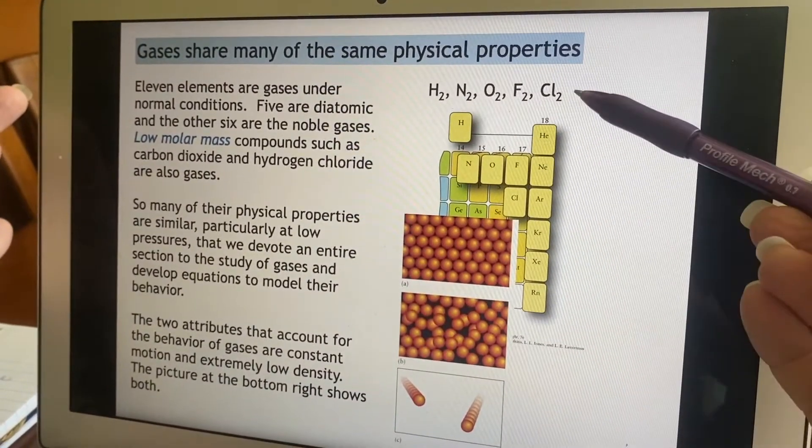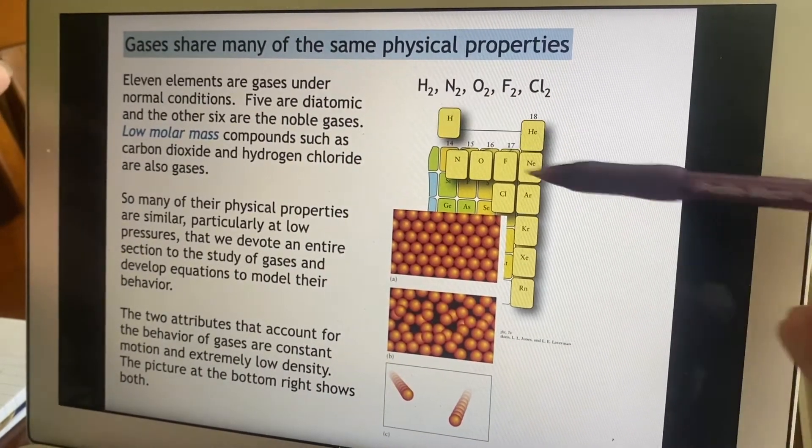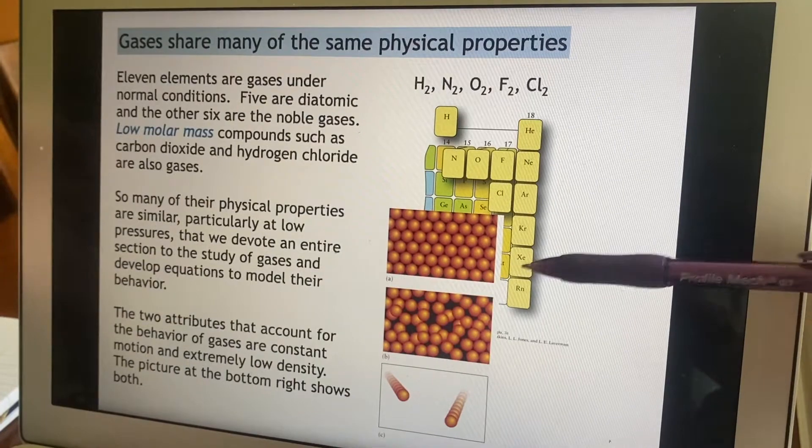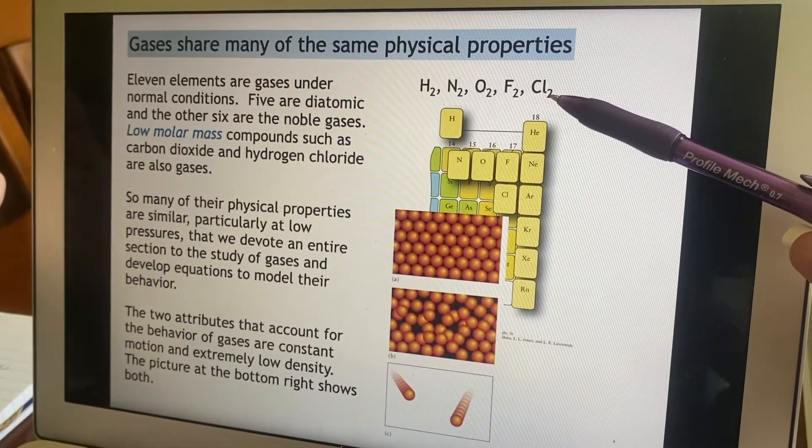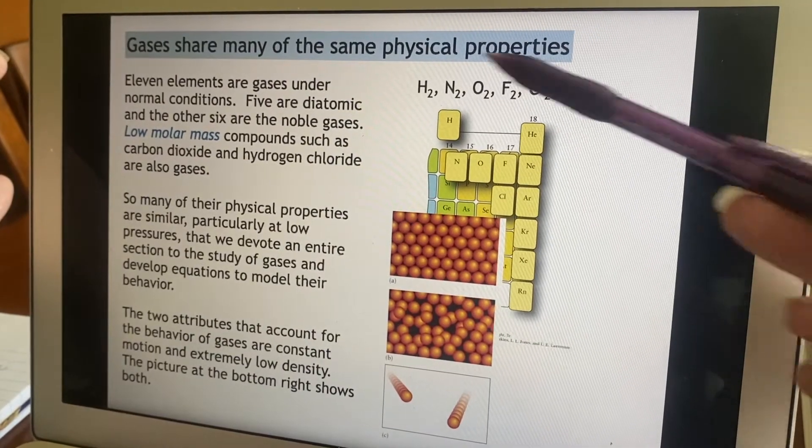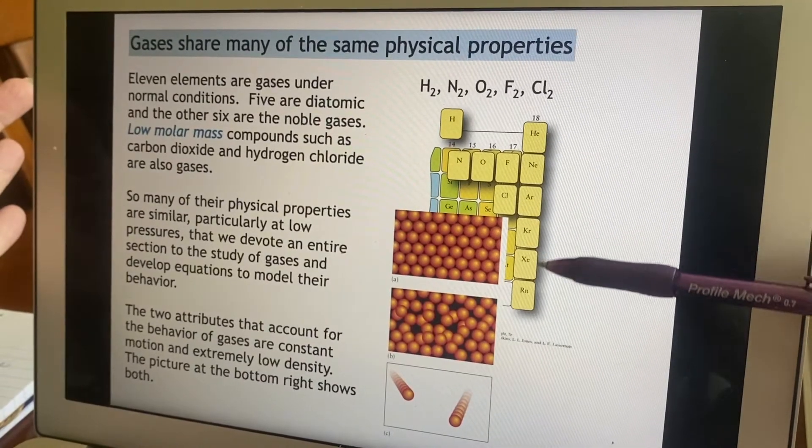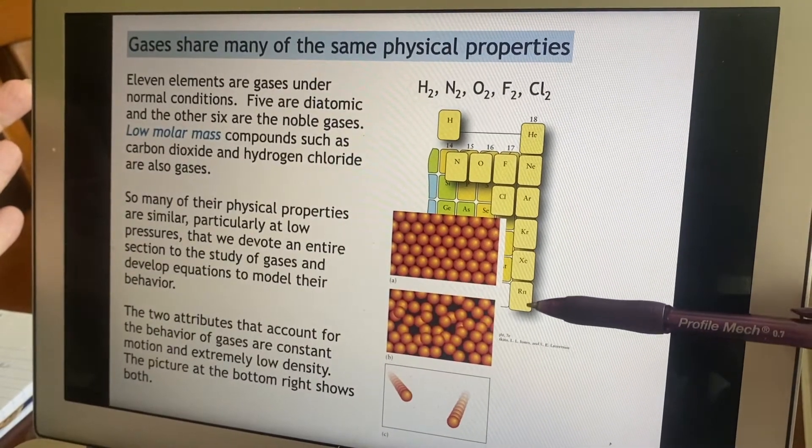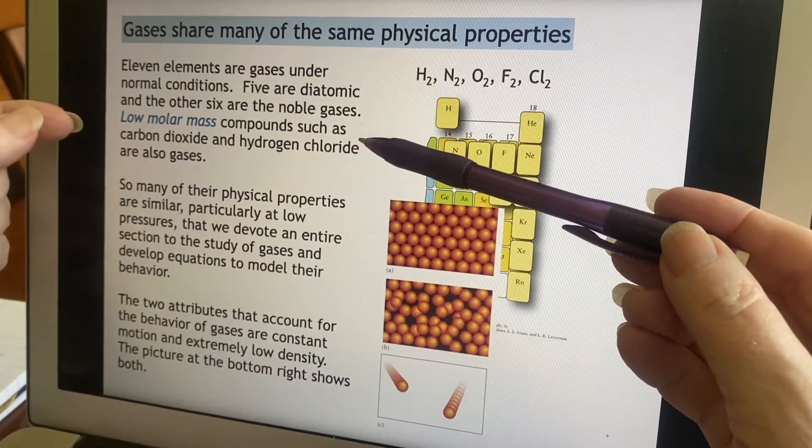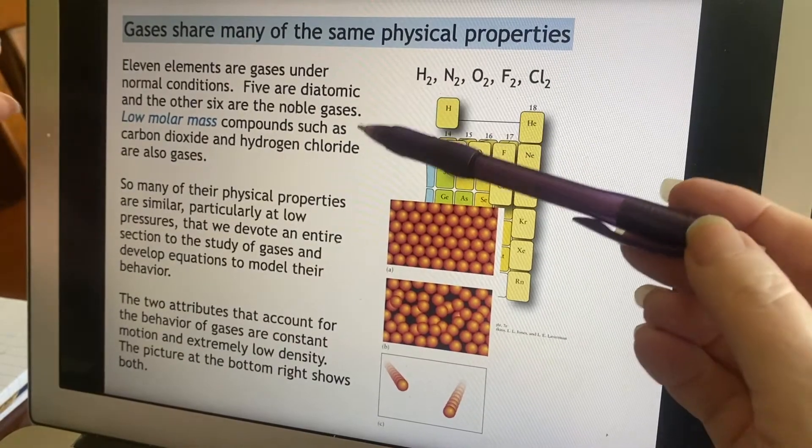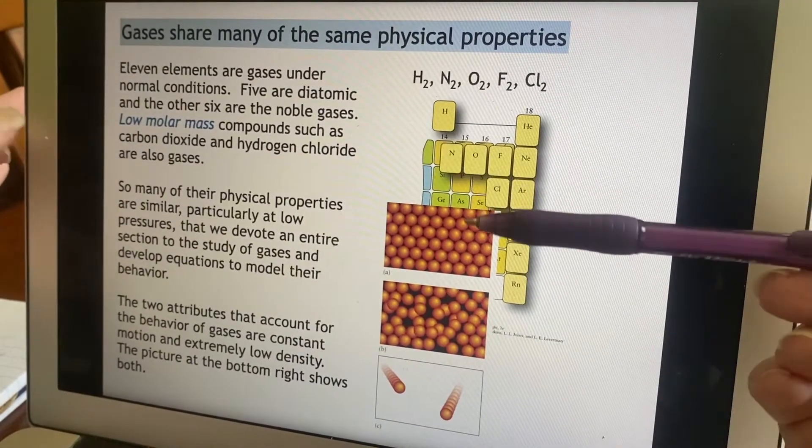So here's some of our favorite gases. Eleven of the elements are gases normally. About half are the diatomics. We learned about the diatomics before, there were seven of them. Five of those end up being gases. The other six are these noble gases that are in this column on their own, so they're easy to find. It turns out that if you have a compound with a very low molar mass, it will tend to also be a gas, like carbon dioxide and hydrogen chloride, for example.